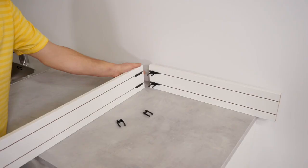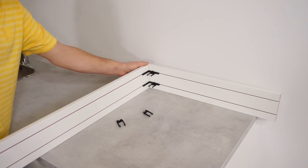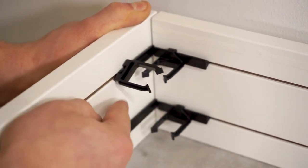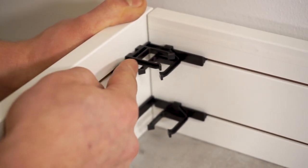When two pieces of the plinth meet in a corner, you need to attach both to the same leg. Put the clips upside down on one of the plinths. That way they won't collide.